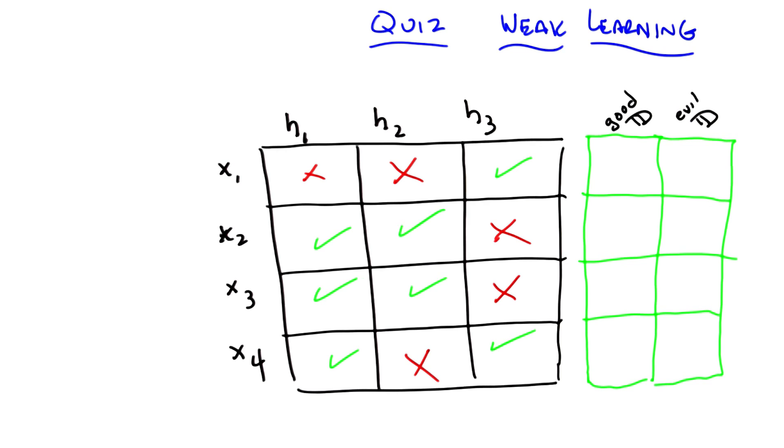So in this case, hypothesis one gets examples two, three, and four correct, but gets example one wrong, while hypothesis three gets one and four correct, but two and three incorrect. I see. So there's no hypothesis that gets everything right.